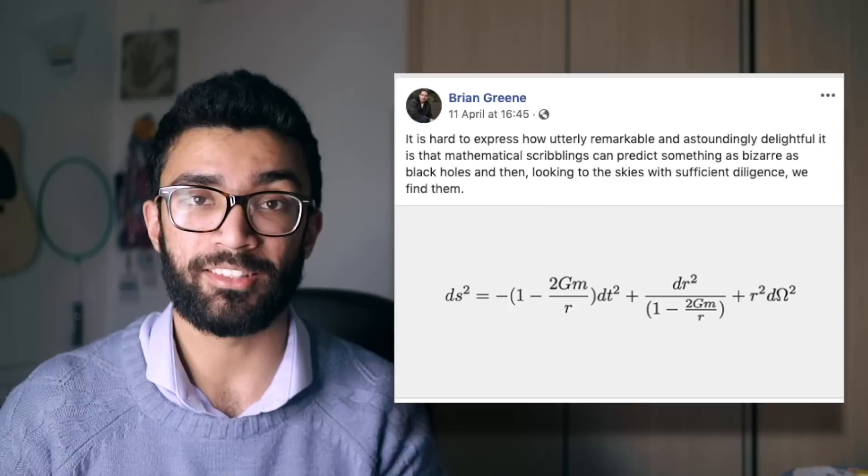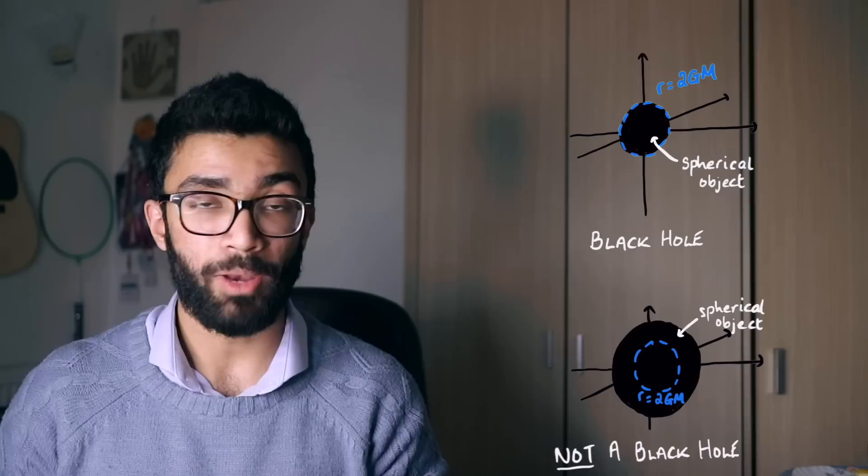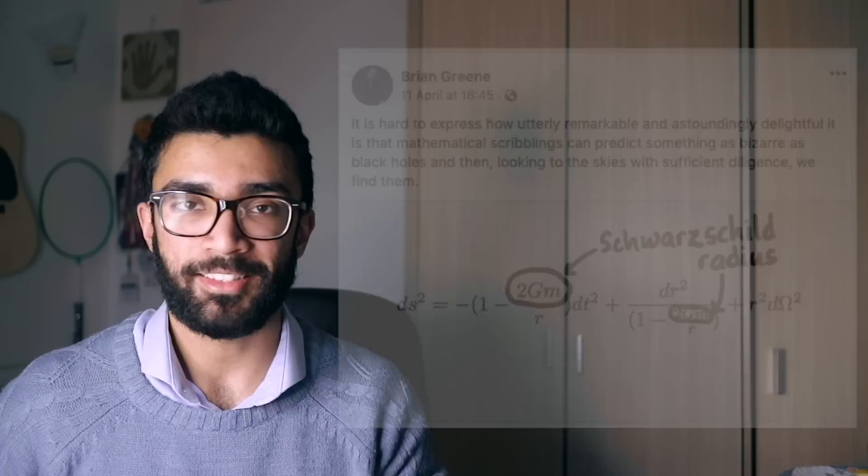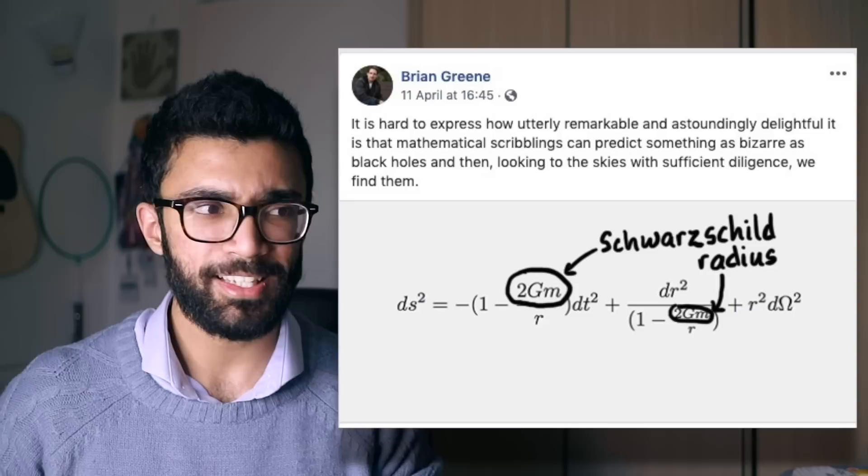An important point is that this equation assumes the body at the center is not rotating and not charged — valid assumptions for stars and planets, which overall aren't charged and rotate fairly slowly relative to neutron stars or rotating black holes. The equation really shines when dealing with black holes: objects whose entire mass is squished within the Schwarzschild radius. That distance is encoded into our interval measurement, allowing us to understand how space-time warps around a spherical massive object, and what would happen to an object falling into a black hole.